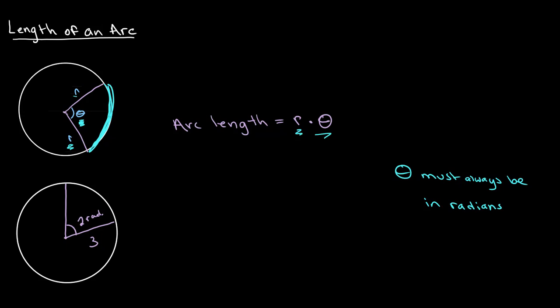This is very simple—all we have to do is multiply r times theta. So our radius is 3 centimeters multiplied by 2 radians, and we get that our arc length is equal to 6 centimeters. That's the length of this arc over here. That's simple enough.